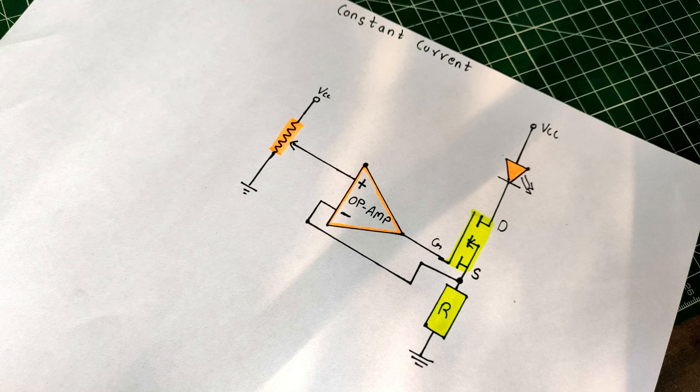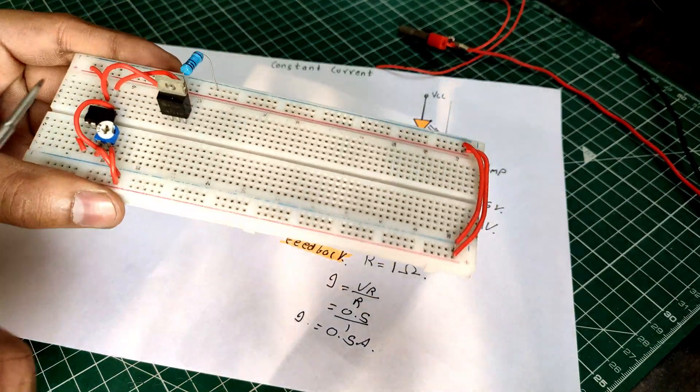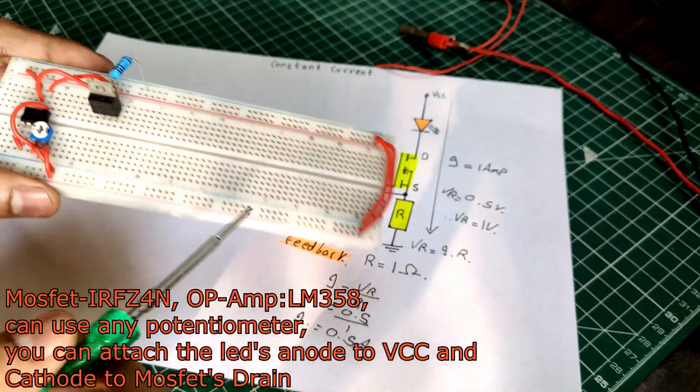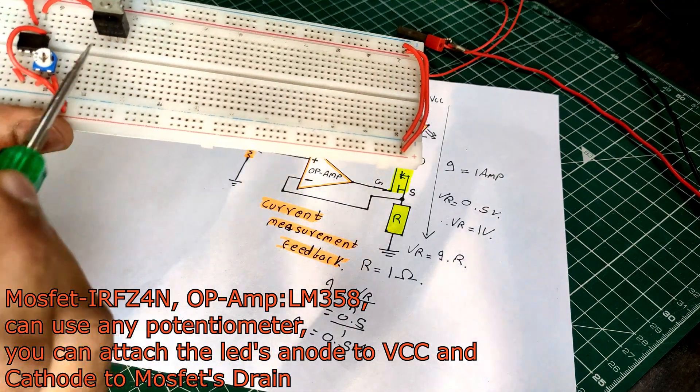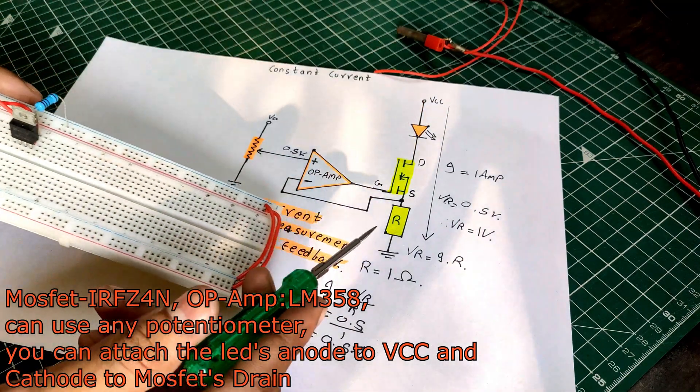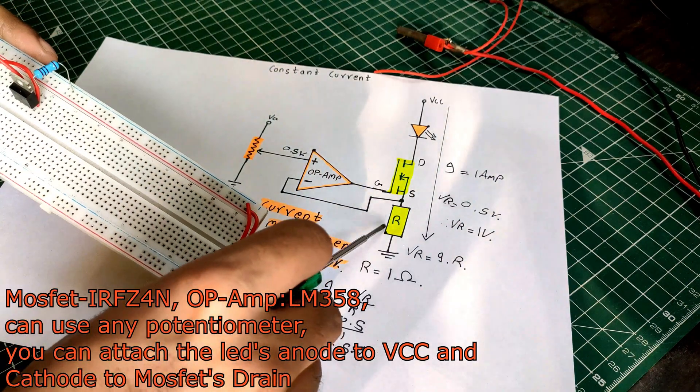Now let's make this circuit on a breadboard and test it out. As we can see, I have mounted all the components on the breadboard. This is the MOSFET that I will be using which is an IRFZ44N. I will connect a 10 watt LED to its drain. Then this is the 1 ohm resistor that is included in the diagram.